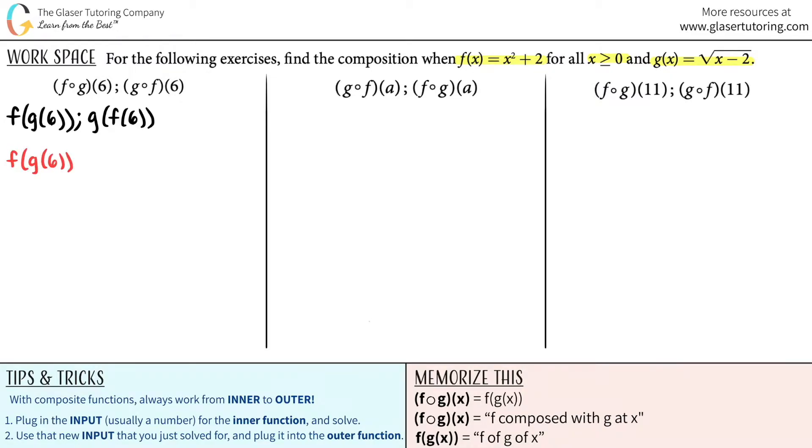With composite functions, you always work from the inner function to the outer function. The inner function here is the g of 6, and the outer function is the f function. So for the first part, we're only going to be working with g of 6.